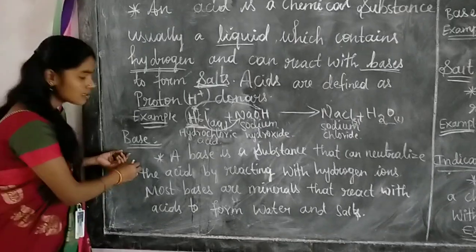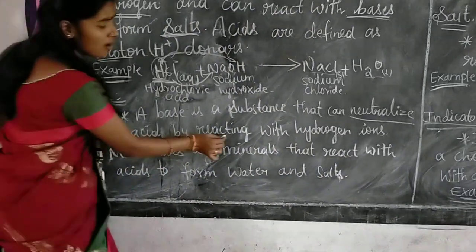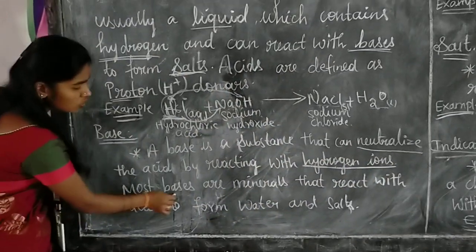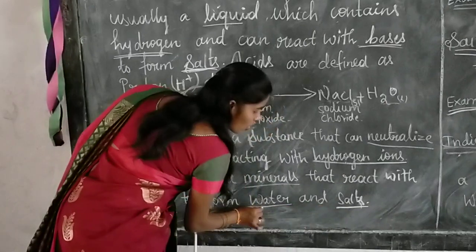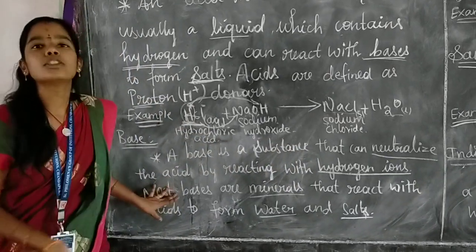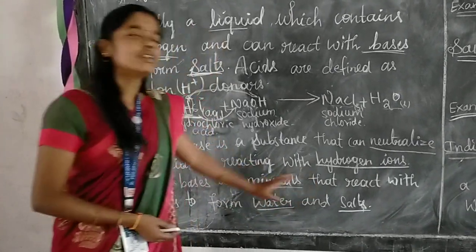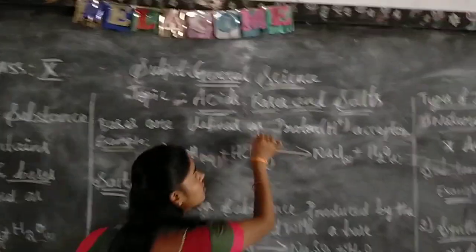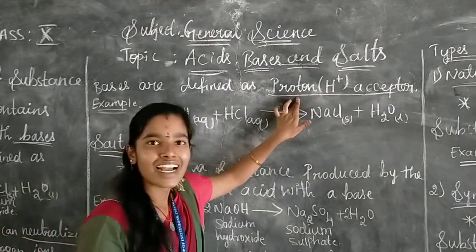The next term is base. A base is a substance that can neutralize an acid by reacting with hydrogen ions. Most bases are minerals, and they react with acids to form salt and water. Bases are defined as proton acceptors, whereas acids are proton donors.